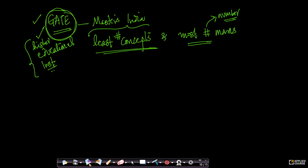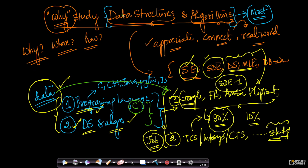Once you become a software engineer in the industry, how are you going to employ some of these techniques? How are the techniques you're learning in data structures and algorithms actually useful? Can you give some real-world examples that we use on a day-to-day basis? Very valid question. Let's walk through some examples, starting with the simplest ones.